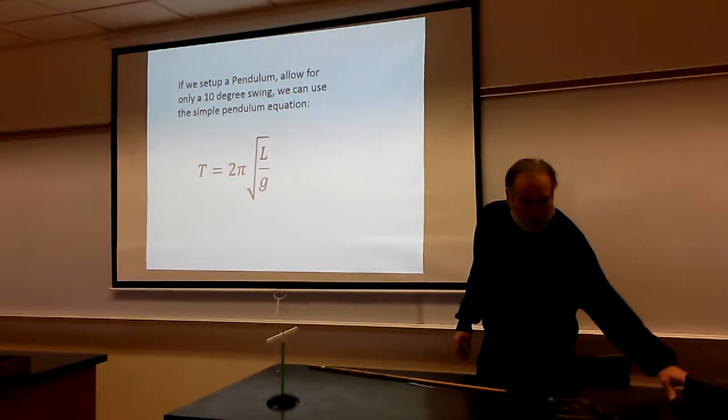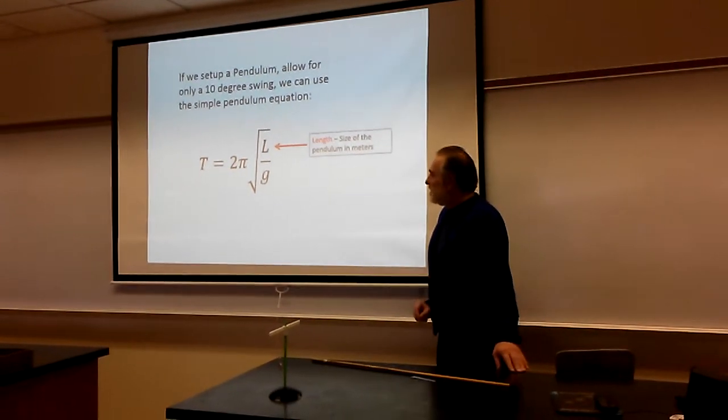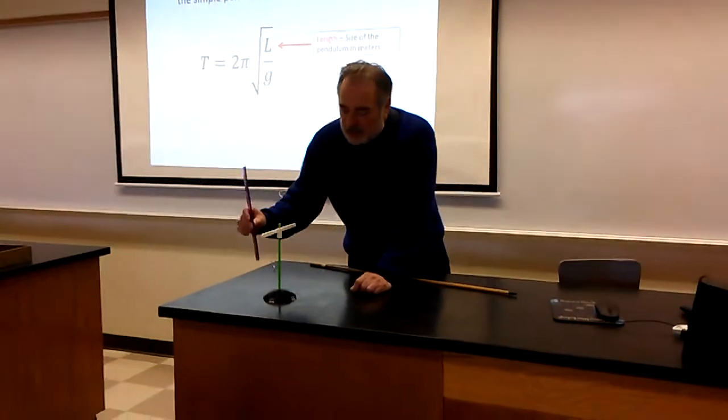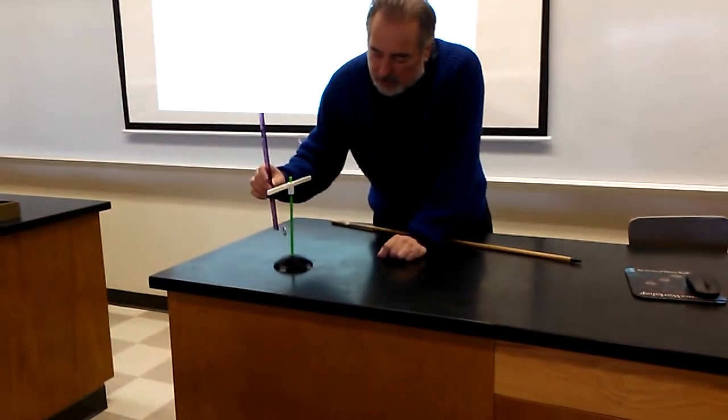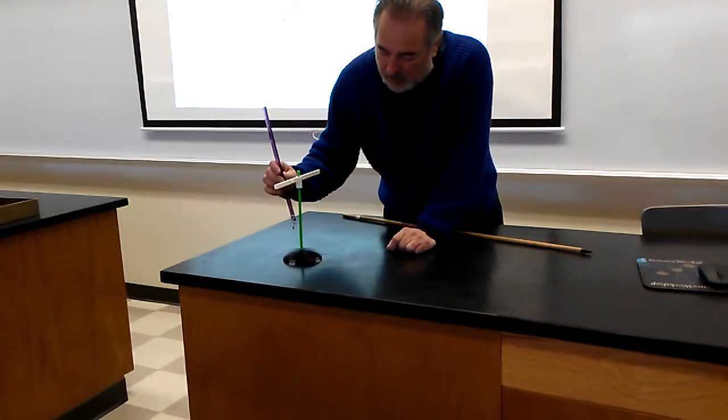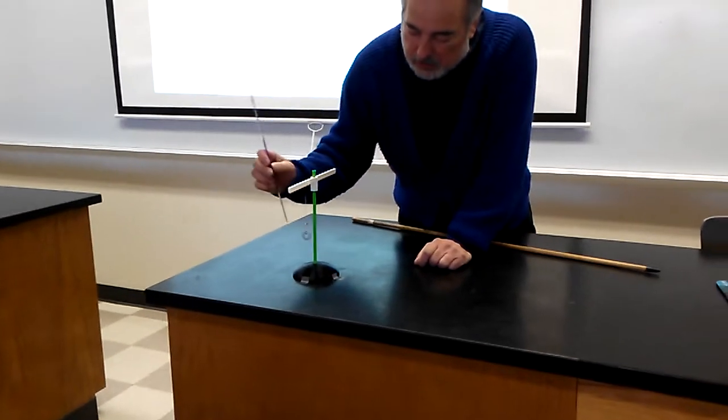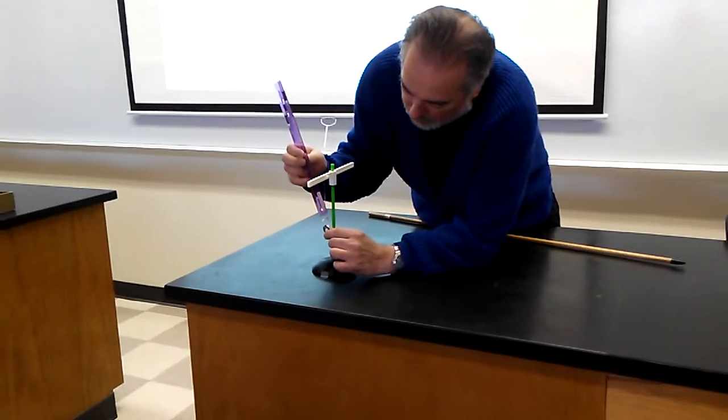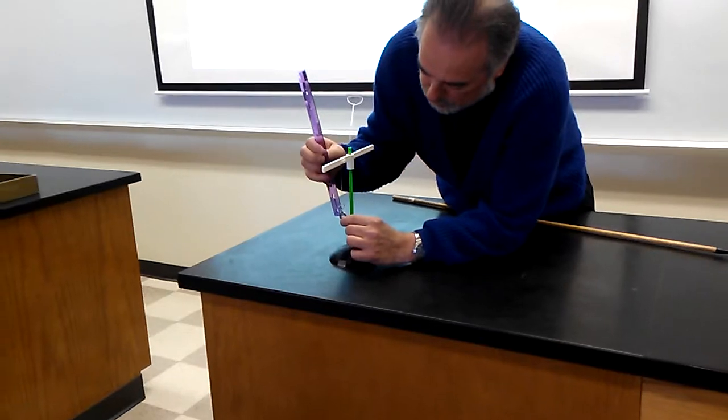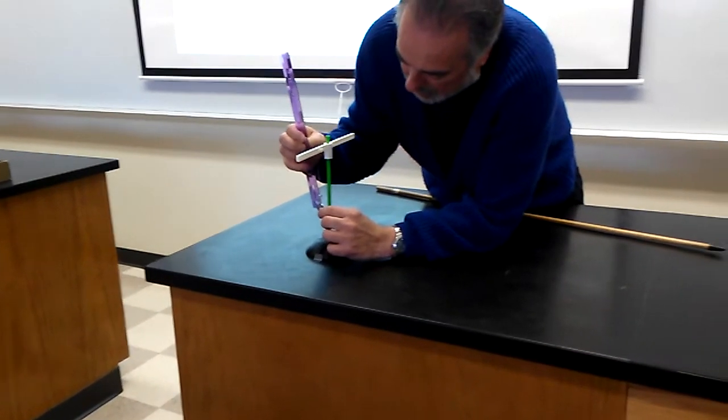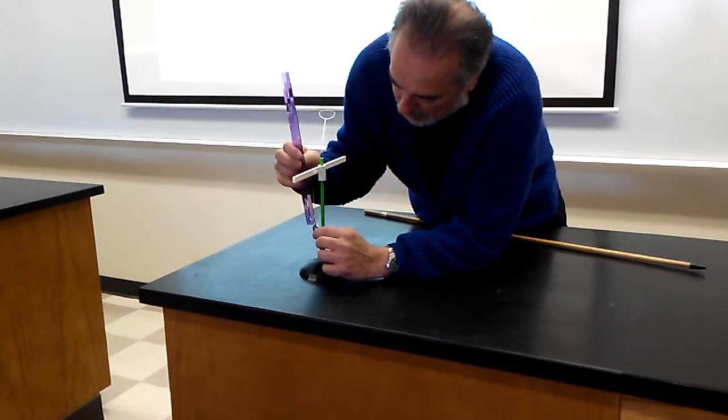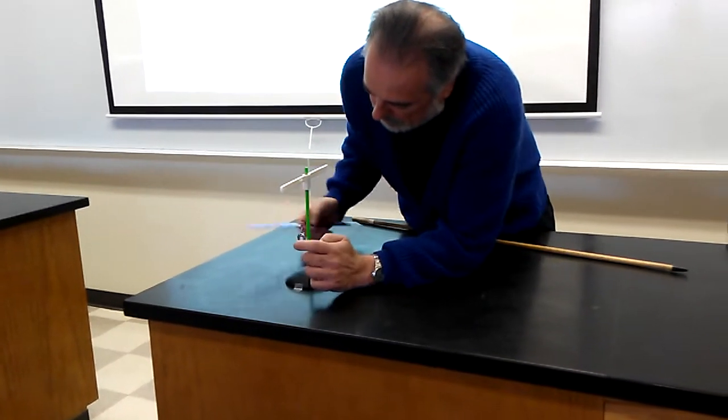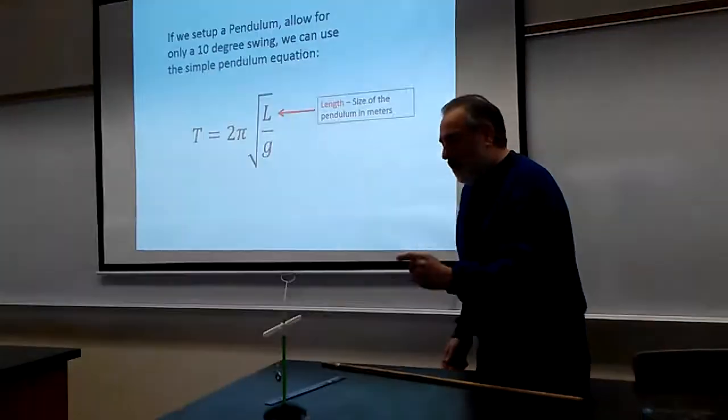Now what these variables are, length is the size of the pendulum in meters, and you're going to measure the size. You measure to the center of mass for this configuration, which is going to be a little bit longer. It's not just this part, but probably closer to the center of the ring, to the top of where it goes into the swinging arm.